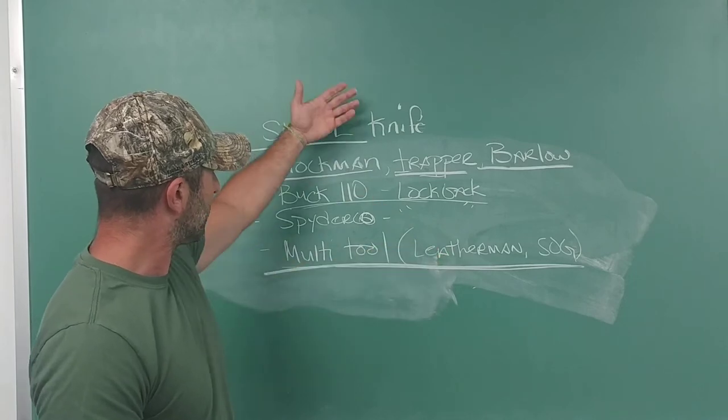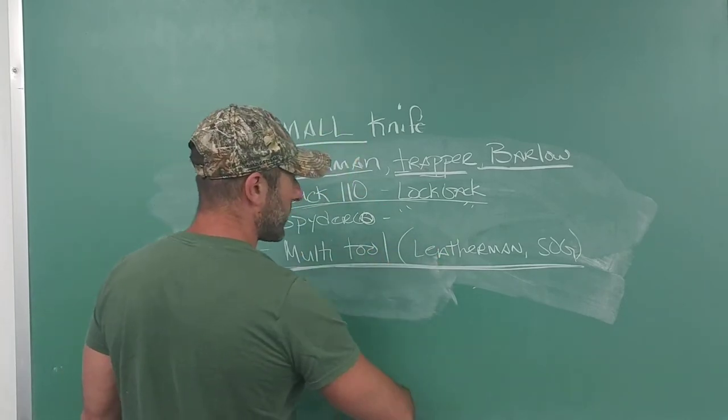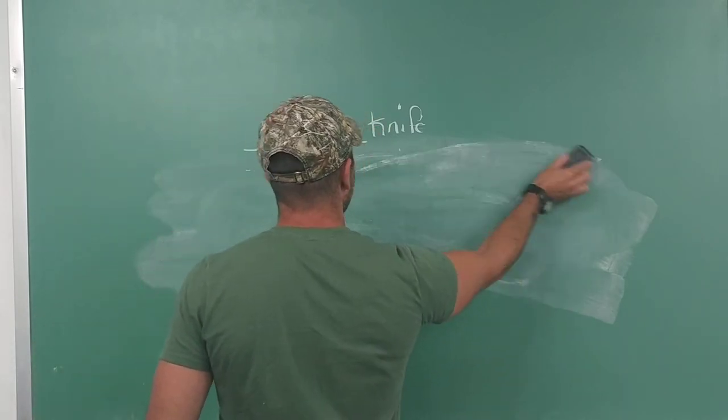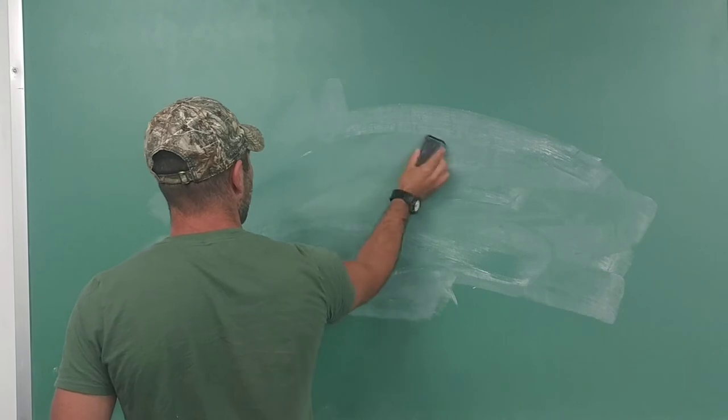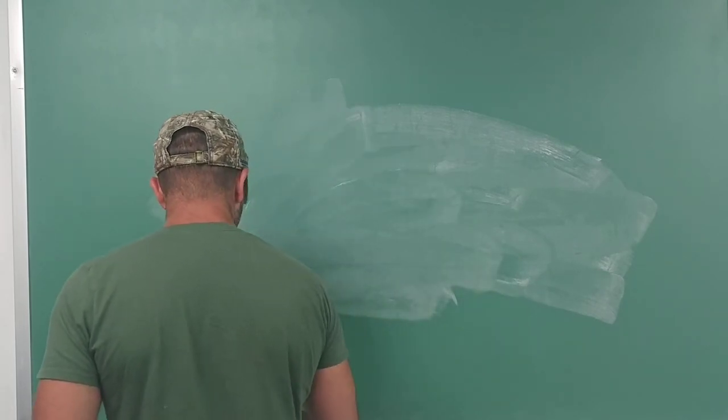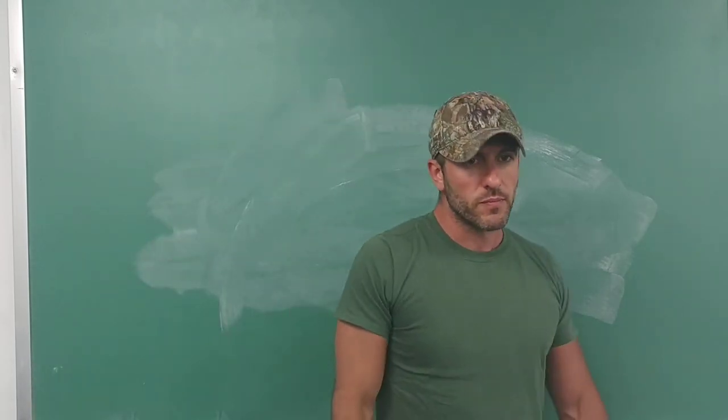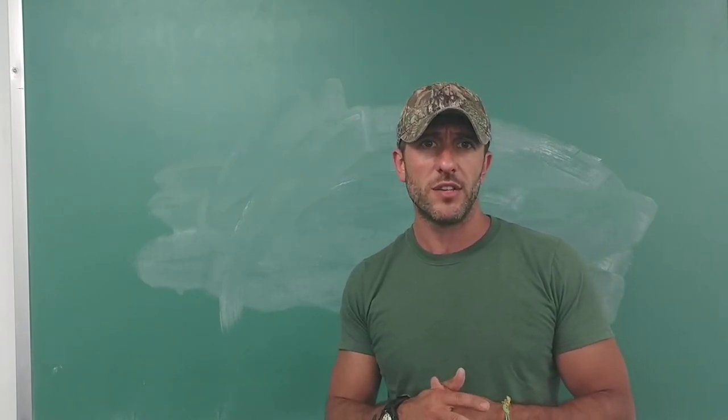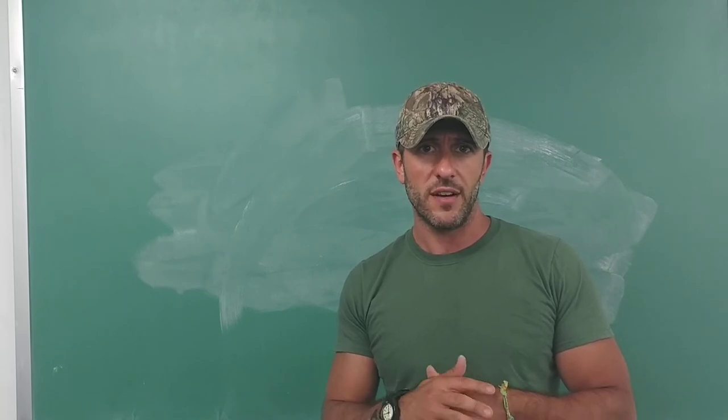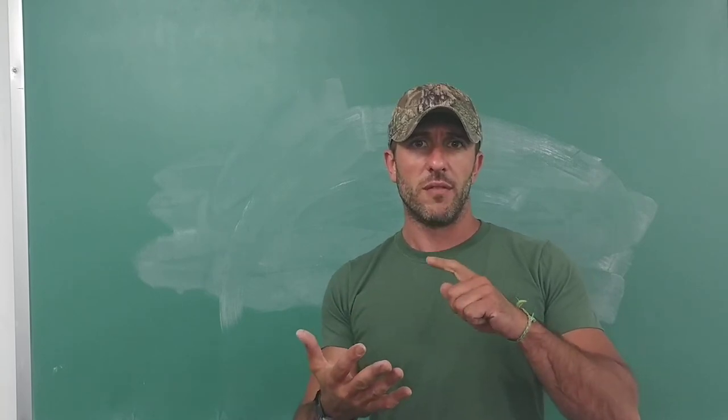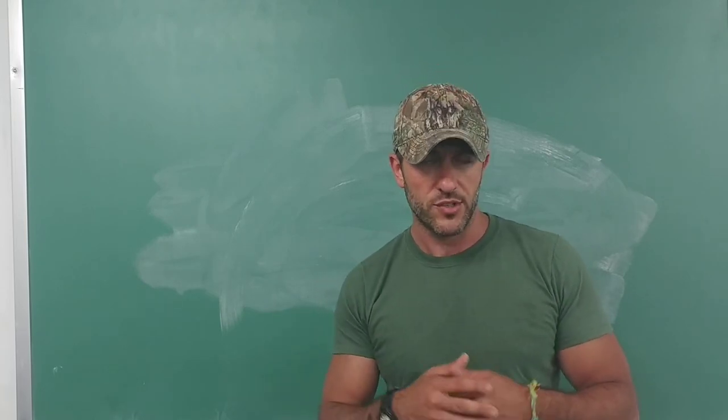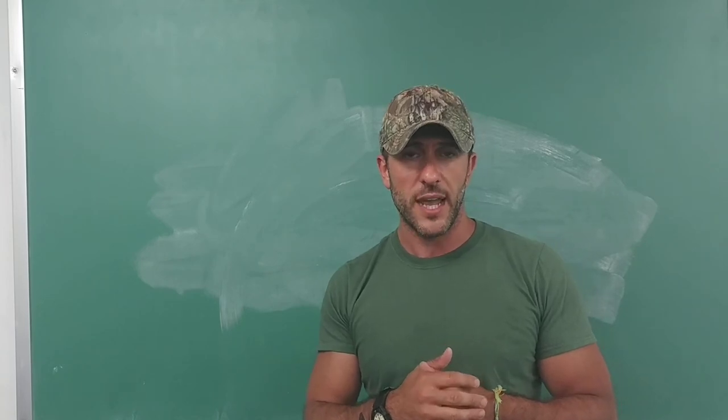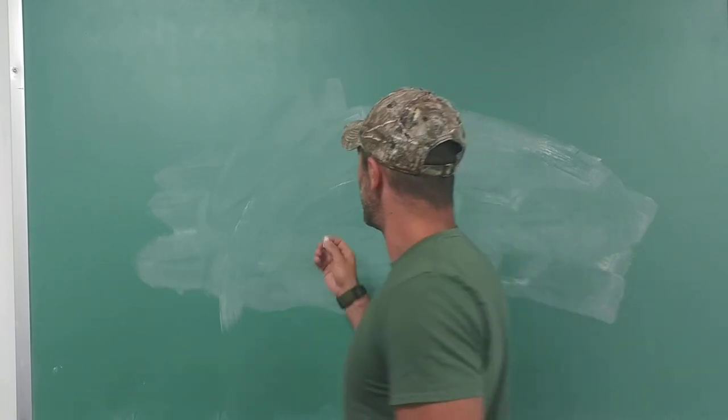The small knife. This is great to have. This will do a lot of your work. Maybe you're opening up packages, cutting twine, cordage. Gutting small game, gutting fish, gutting large game as well. You don't really need much. Our ancestors used a flake of obsidian or flint to perform those tasks. In general, you're not going to need this large knife.